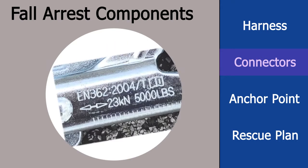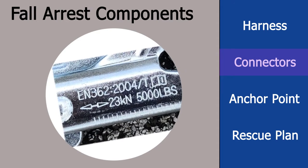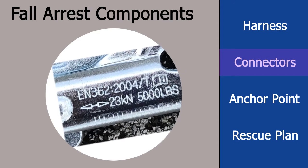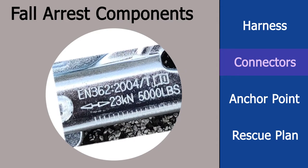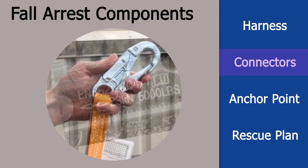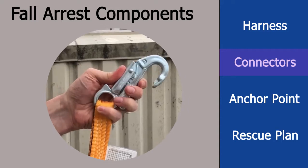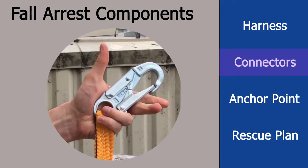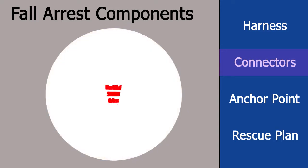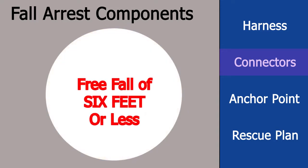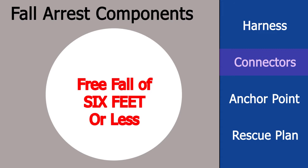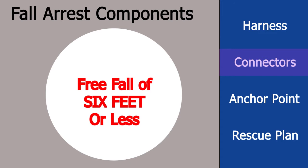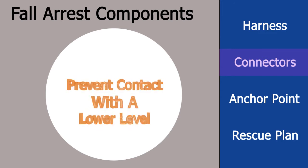Connectors must have a minimum strength of at least 5,000 pounds. Connecting devices must be double-acting and self-locking. Connectors must be set up to limit the maximum free fall to 6 feet or less, and prevent contact with a lower level.